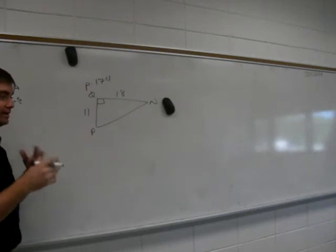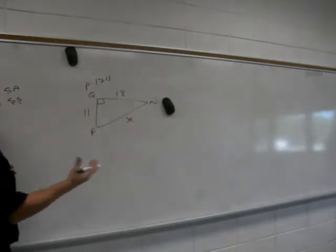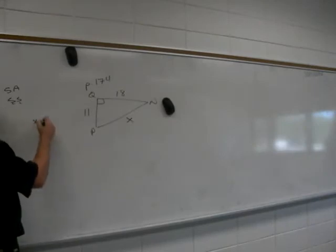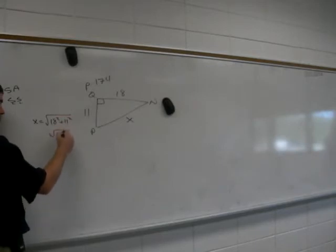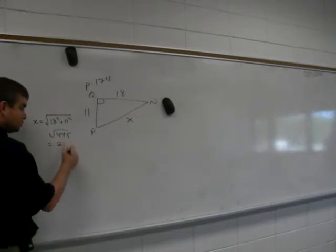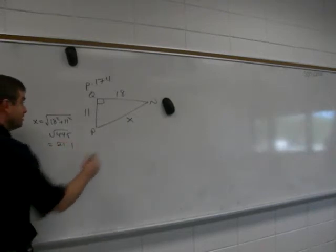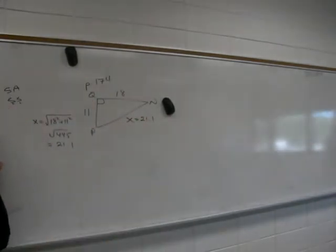So to find X, the very first thing that I would find, I would simply say X equals the square root of 18 squared plus 11 squared, which is like the square root of 445, which works out to be 21.1. So just like that, using the Pythagorean theorem, we figured out the missing side. So we have all three sides.